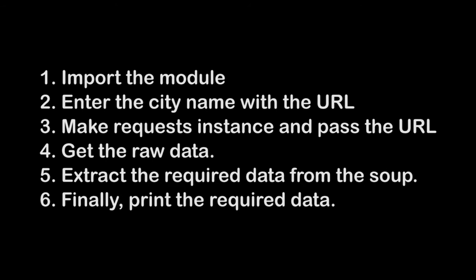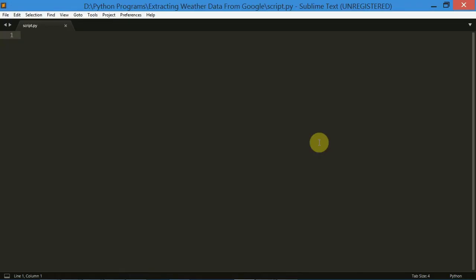First of all we will import both these modules. Then we will ask the user to input the city name, which we will append to the URL and then make a request using that URL. Then we will get the raw data, extract it using Beautiful Soup, format that data, and finally print it. So now we are ready to code.